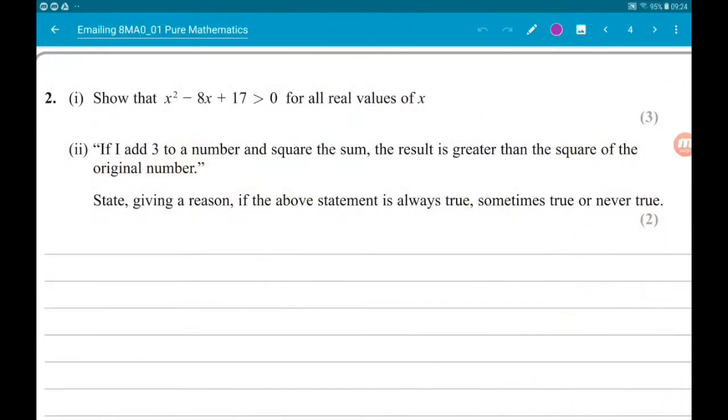Okay, question 2, part 1, wants us to show that x squared minus 8x plus 17 is greater than 0 for all real values of x. So there are two ways to do this. I'm going to do it two ways.